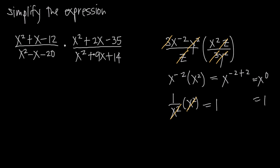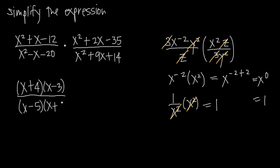Since all of these are trinomials, let's factor them. The numerator of our first fraction, x squared plus x minus 12, factors as x plus 4 times x minus 3, since positive 4 and negative 3 give us positive 1 in the middle and negative 12. The denominator, x squared minus x minus 20, factors as x minus 5 times x plus 4, since negative 5 plus 4 gives us negative 1. Then x squared plus 2x minus 35 factors as x plus 7 times x minus 5, since 7 minus 5 gives us positive 2.